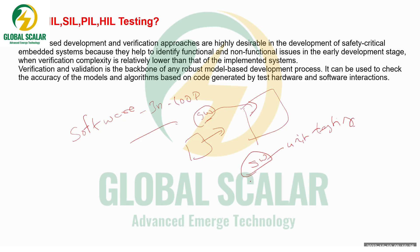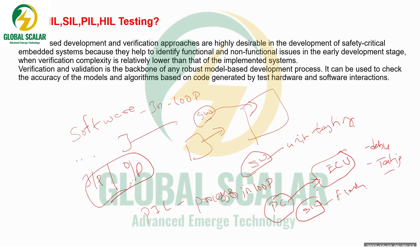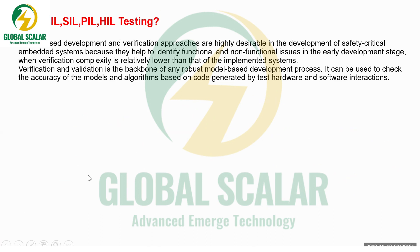PIL — Processor in Loop — specifically involves the ECU being connected to a PC. We flash the software into the ECU from the PC, and we are able to debug and test it. Whatever inputs you give, you expect the corresponding output to be verified. There is no feedback mechanism here.